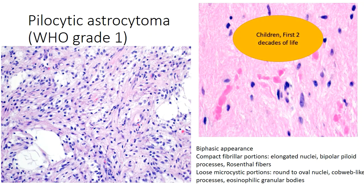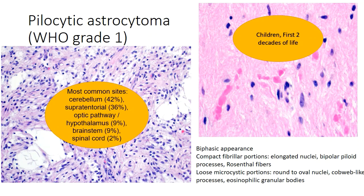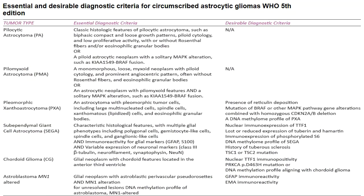Pylocytic astrocytoma typically occurs in children but cases have been reported up to the first two decades of life. It characteristically involves the cerebellum; the supratentorial region is affected in 42% of cases, hypothalamus and brainstem in 9%, and spinal cord in just 2% of cases. Pilomyxoid astrocytoma is a monomorphous tumor with a characteristic myxoid background, sometimes with Rosenthal fibers and/or eosinophilic granular bodies, and a characteristic angiocentric pattern. An astrocytic neoplasm with pilomyxoid morphology and KIAA1549 or BRAF fusion also qualifies as pilomyxoid astrocytoma.